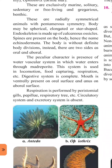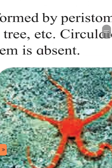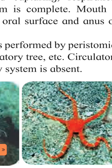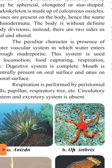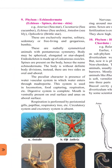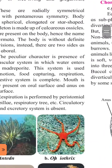Respiration bhi water vascular system se hi karte hain. The digestive system is complete — meaning it has two openings: one is the mouth and the other is the anus. Mouth is ventrally present on the oral surface. Oral surface ke upar mouth situated hai. Aur peechhe aboral surface par anus situated hai.